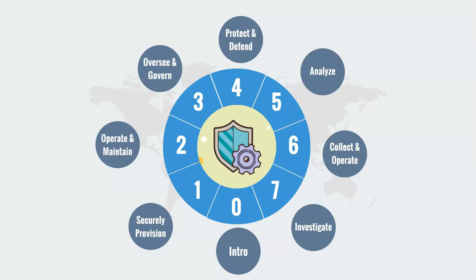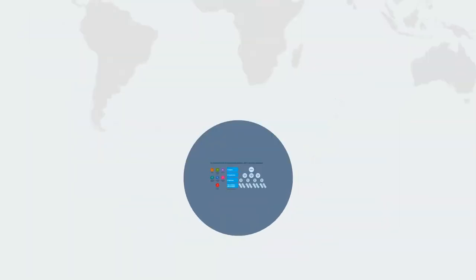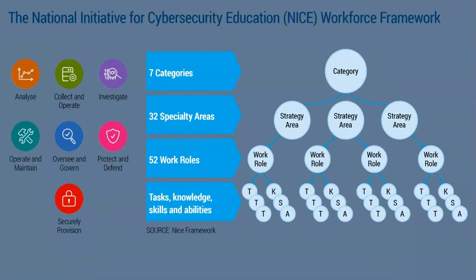Hello everyone. In my last video I discussed the concept of KSA, which means Knowledge, Skills and Abilities. In this video we will see the seven domains of security and the related work areas of those domains. In my next videos you can see the mapping of these work areas to security domain positions, and finally the mapping of the related tasks and KSA to those positions.